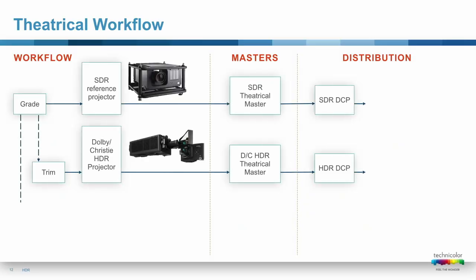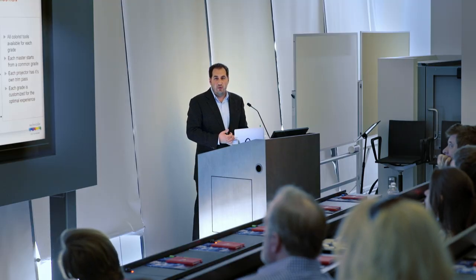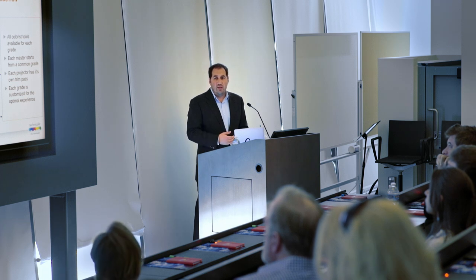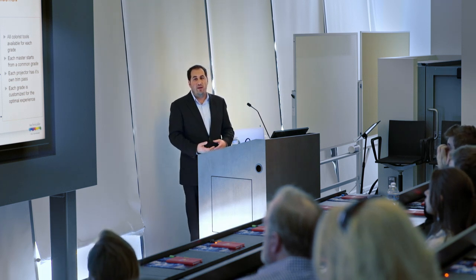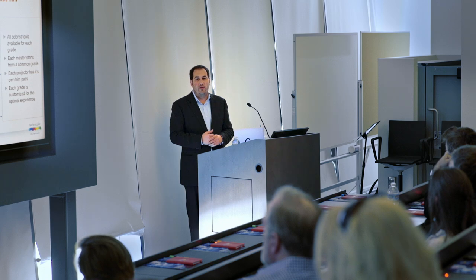Let's look at the workflow. What does this mean for us doing a grade for these different projectors? It's not much different than what we've done before for theatrical. Once we grade and have an output-referred lookup table to a standard dynamic range projector, we can remove that LUT, replace it with a different projector's output-referred LUT, and trim the grade. There will always be a trim pass involved because as you change the projector — how colors are behaving, the white point, the contrast — the colorist still has to touch it and make sure it looks appropriate on that new screen.